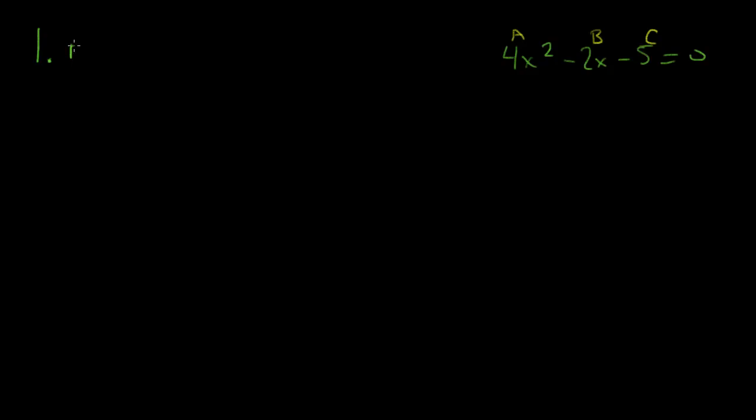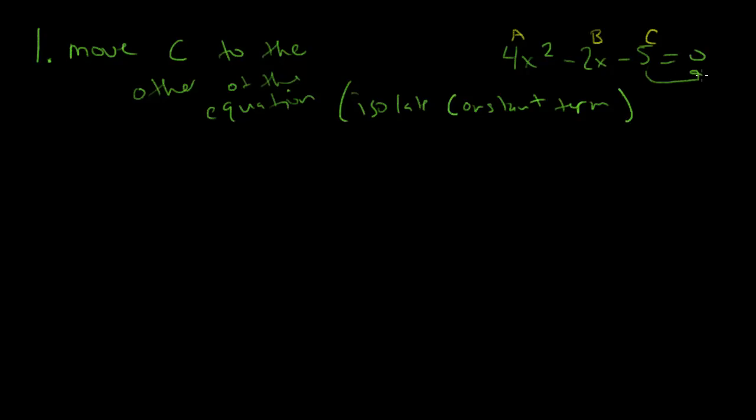Now, step 1 is to move C to the other side of the equation. So that's like the step where you move this guy over here. Step 2, if A does not equal 1, if it does, go to step 3. If it doesn't, divide both sides by A.